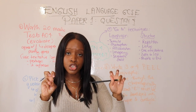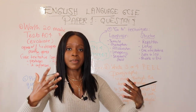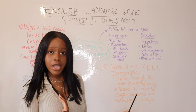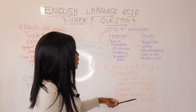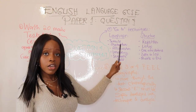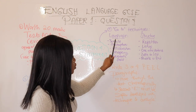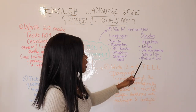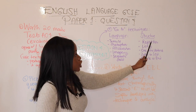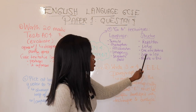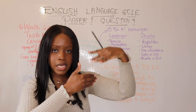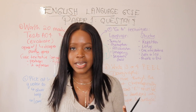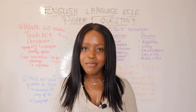Step four: always have some go-to language and structure techniques you should anticipate will show up in any fiction extract. For language, look for simile, metaphor, alliteration, imagery, and semantic field. For structure, your go-to techniques should be repetition, listing, one-word sentences, zooming in or zooming out, and juxtaposing what happens in the middle of the extract versus the end. Those should be your go-to structural techniques.